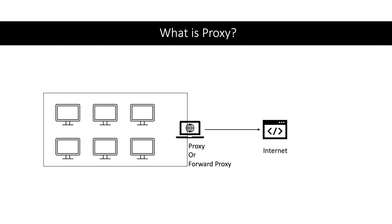Now why do we need this? You might have noticed that in your college or in your company, there are certain websites which are restricted. So when an organization wants to control what you can access on the internet and what you cannot access, proxy servers help them do this. When you are using a proxy, it also helps to protect the identity of the client. The website to which you are connecting will only know about the proxy — it will not know about the client. So you are protecting the anonymity of all the machines within your organization.